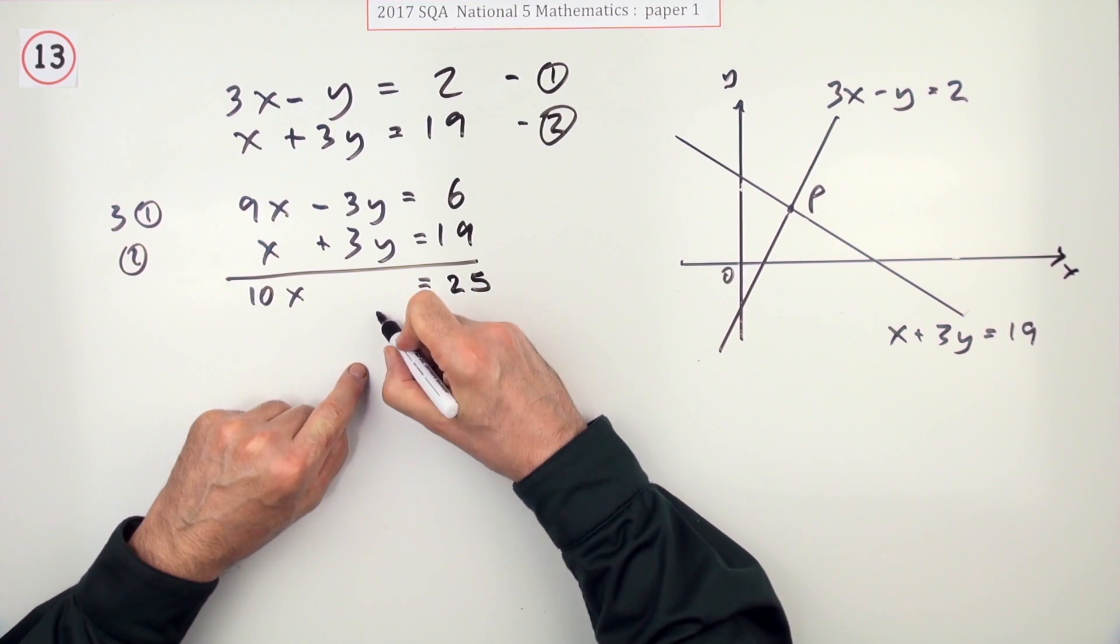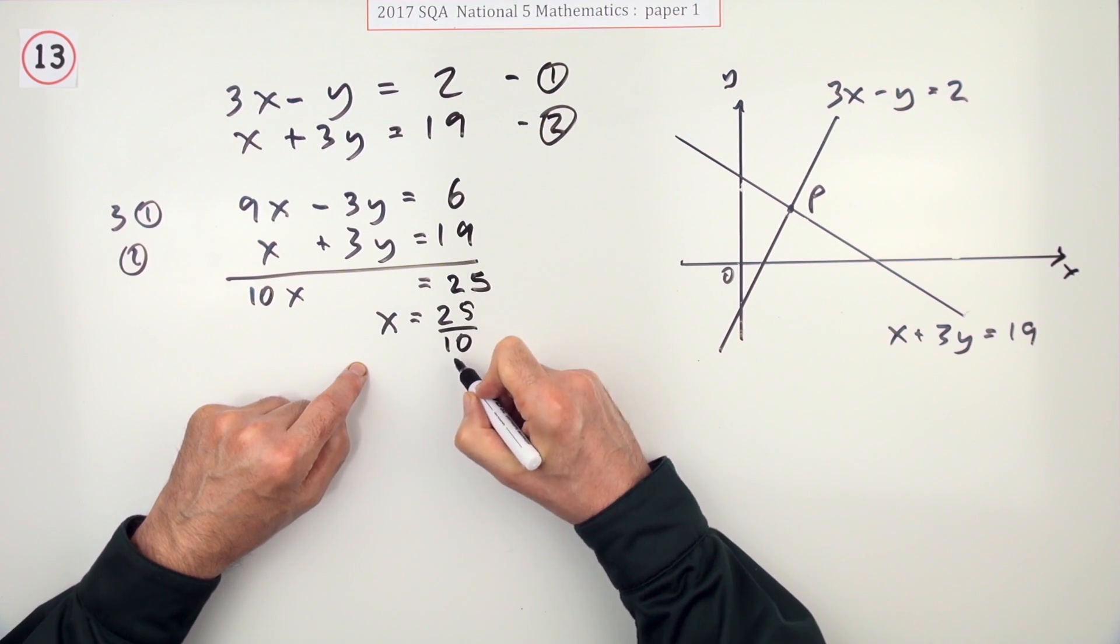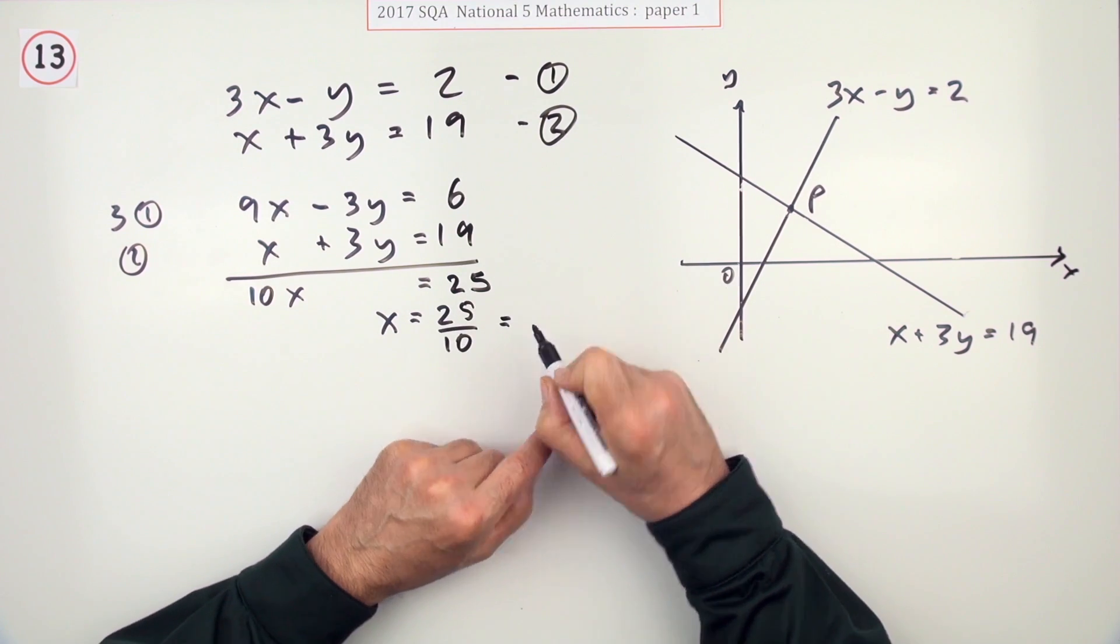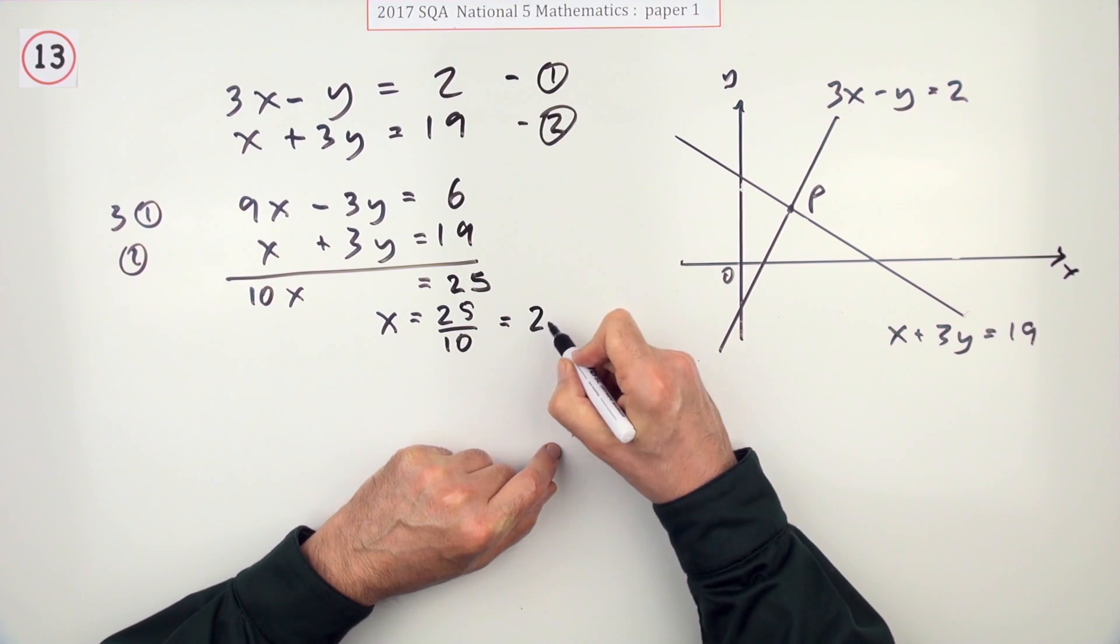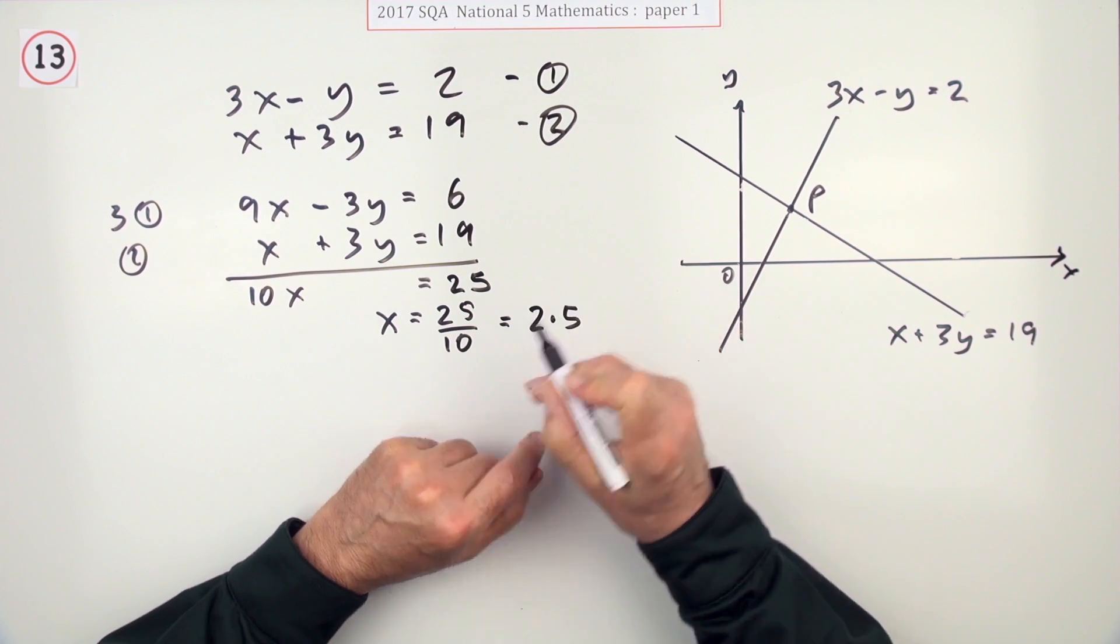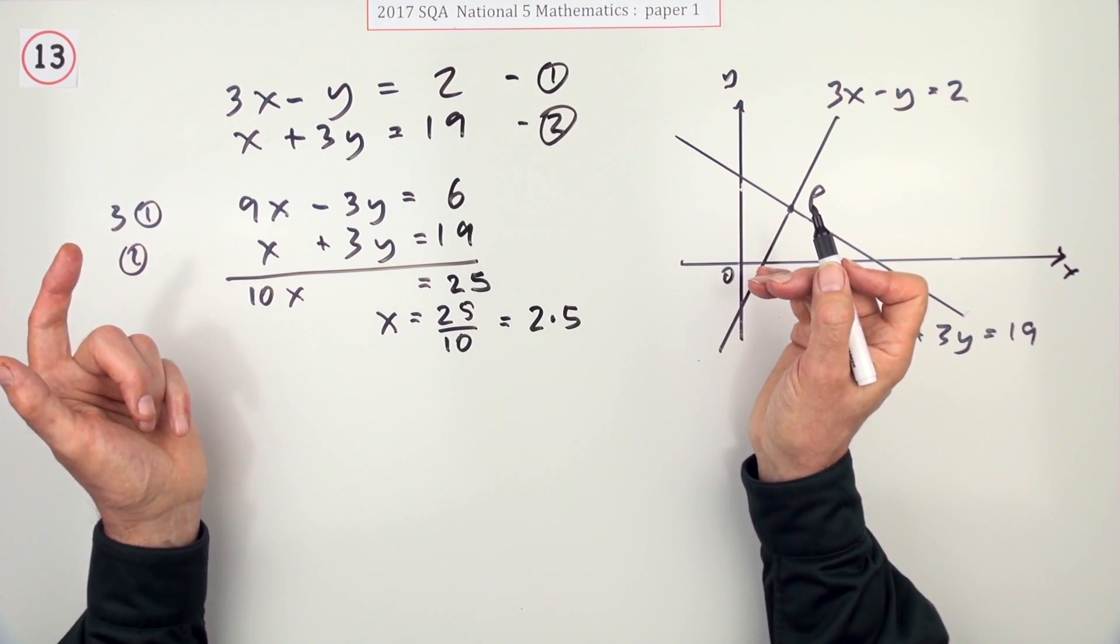And you think, x equals 25 over 10, which is 2.5. Or will I call it 2.5? I think I'll call it 2.5. Rather, it wasn't a fraction at all and it was a nice little whole number that came out of it. But that's what happened.